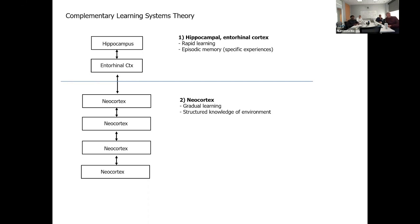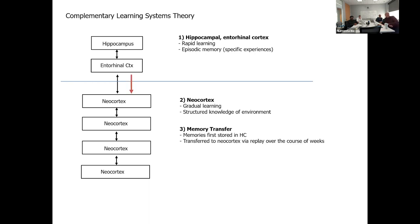The neocortex, according to this theory, is more of a gradual learning system. It learns slowly and doesn't represent episodic memory — it represents more structured models of the environment, like modeling of objects. The third part of this theory is that we always learn first in the hippocampal complex, forming initial memories, and those are later transferred to the neocortex.